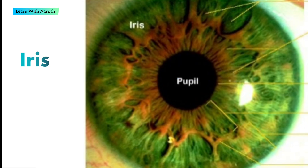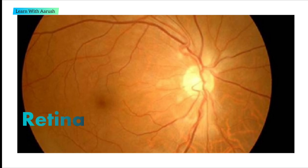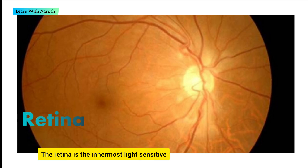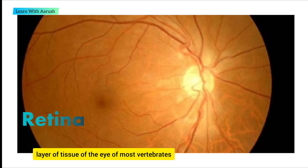Next comes the retina. The retina is the innermost light-sensitive layer of tissue of the eye of most vertebrates.